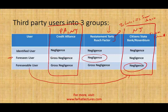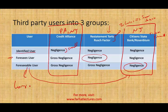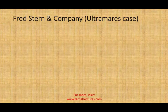Under Credit Alliance, negligence claims are limited to a small identified group. But under Citizen Bank/Rosenblum, for a publicly traded company, basically everyone — as foreseeable users — can sue the auditor for negligence in New Jersey. That's potentially hundreds of thousands of people. One person filing in New Jersey can trigger a class action lawsuit that everyone else can join.